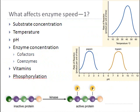If we add more substrate, we can increase the rate of reaction. If there are more substrate molecules in a beaker, then there are more chances for that substrate to bump into an enzyme molecule and for the reaction to occur.